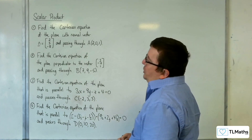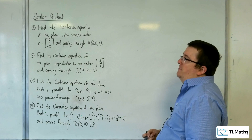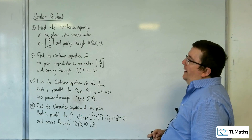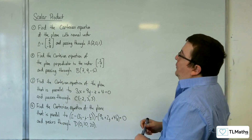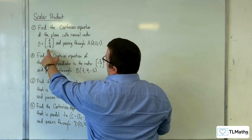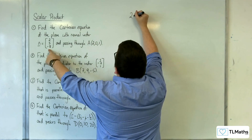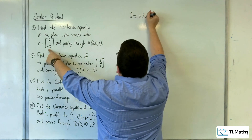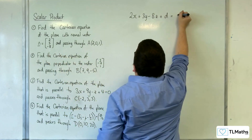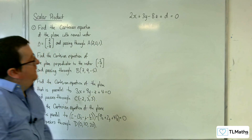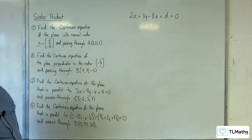Find the Cartesian equation of the plane with normal vector n equals (2, 3, -8) and passing through A, which has coordinates (2, 0, 1). The first thing you should be able to identify is that using the normal vector we can write down that the plane must have the equation 2x plus 3y minus 8z plus d equals 0. Now we need to work out the value of d.